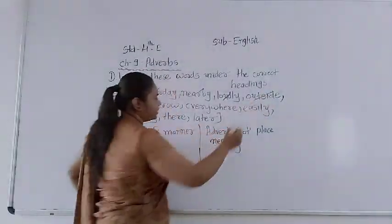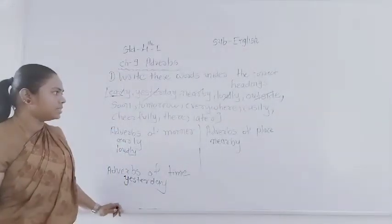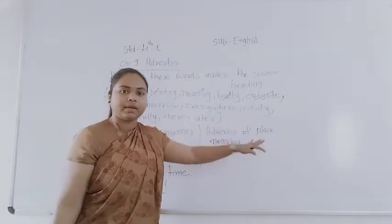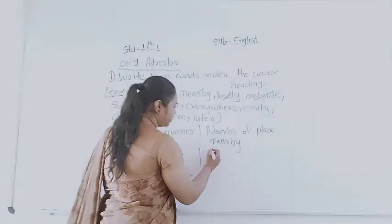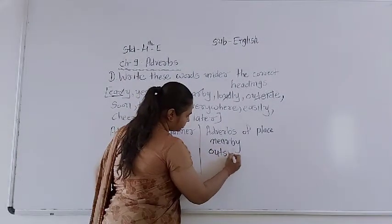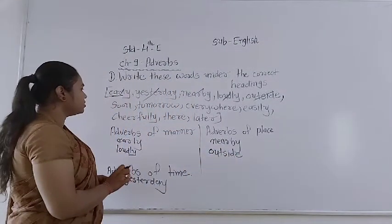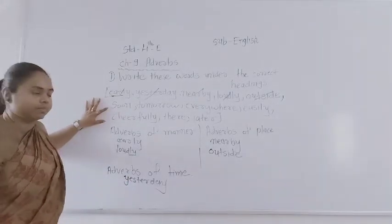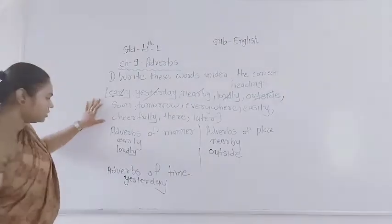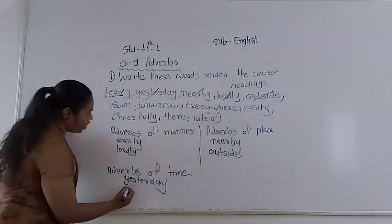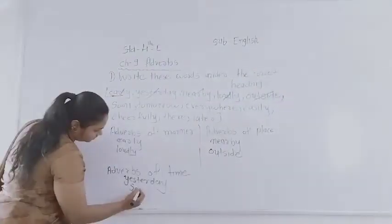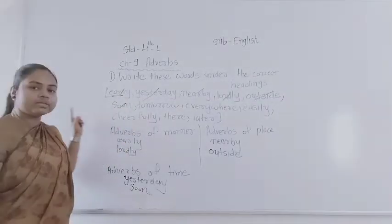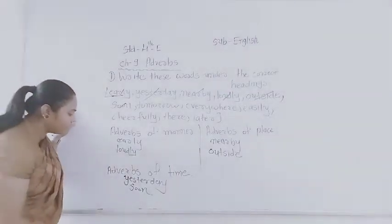Outside — outside is place, so we will write here under adverb of place. Then 'soon' — soon is describing time, so we will write here under adverb of time. Then 'tomorrow' — tomorrow is also an adverb of time.